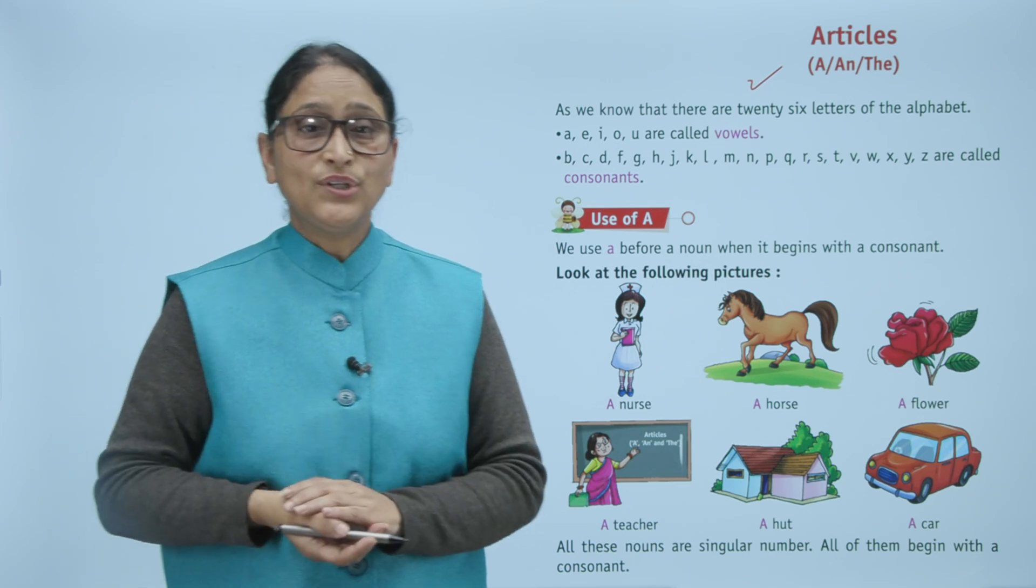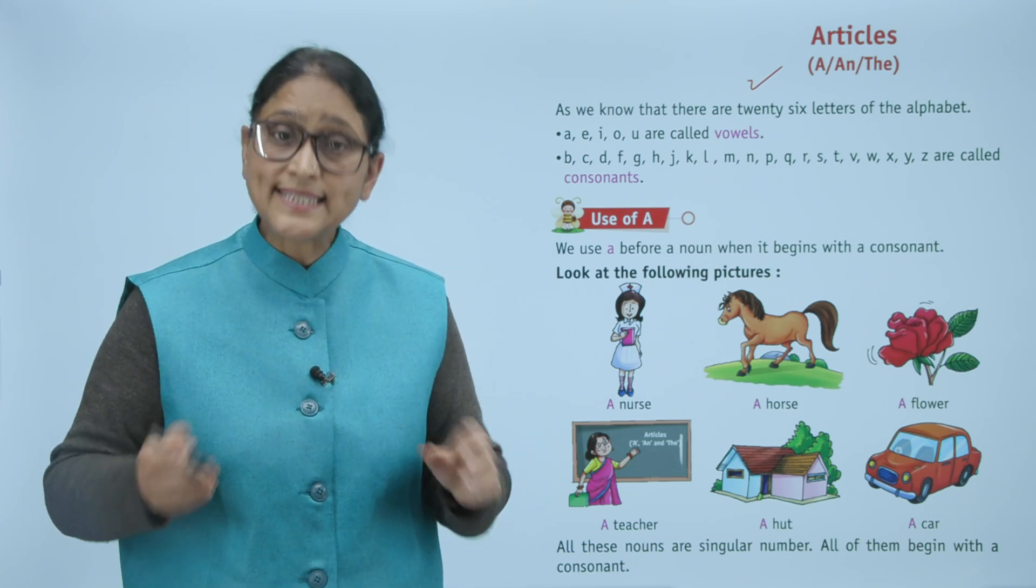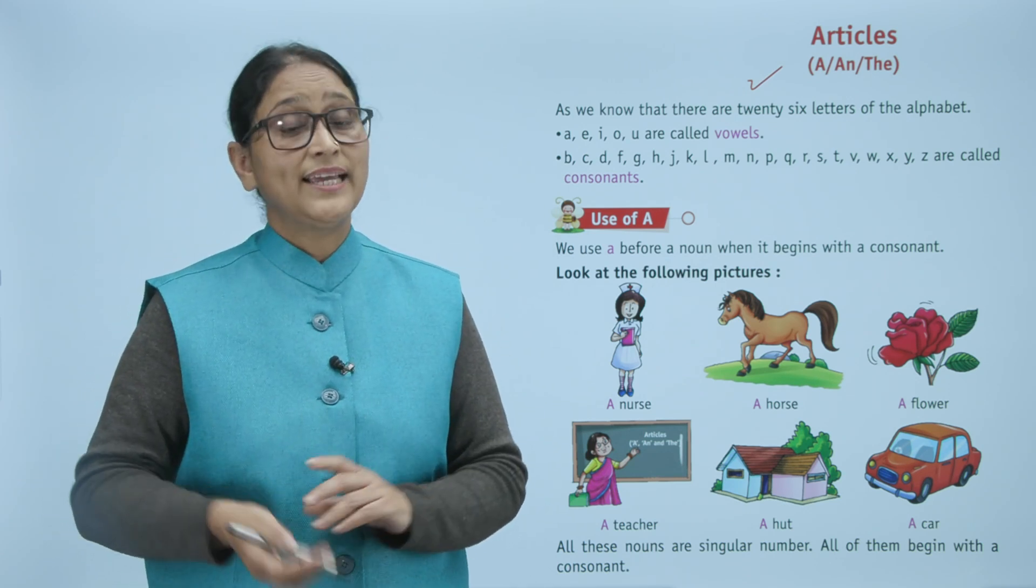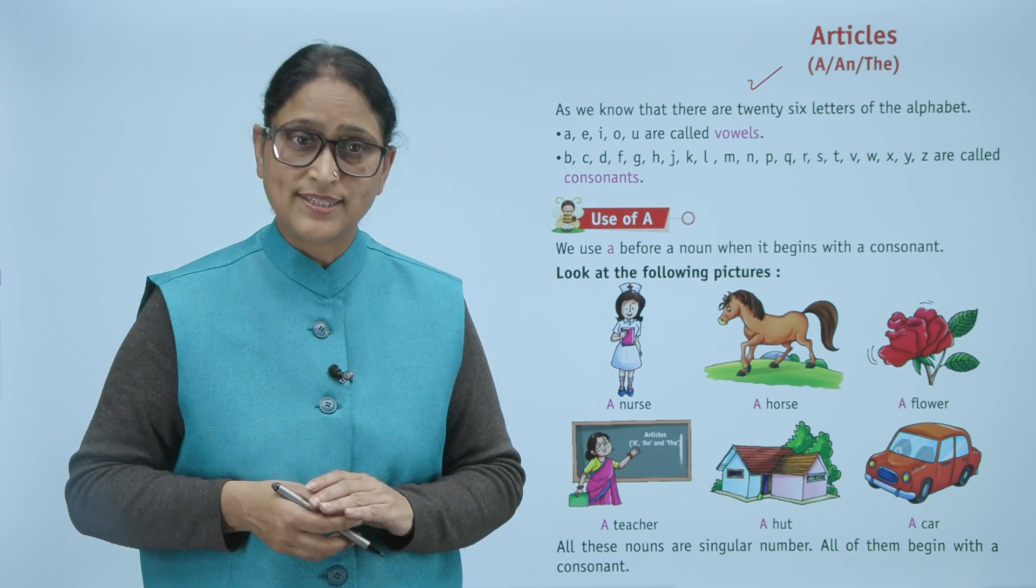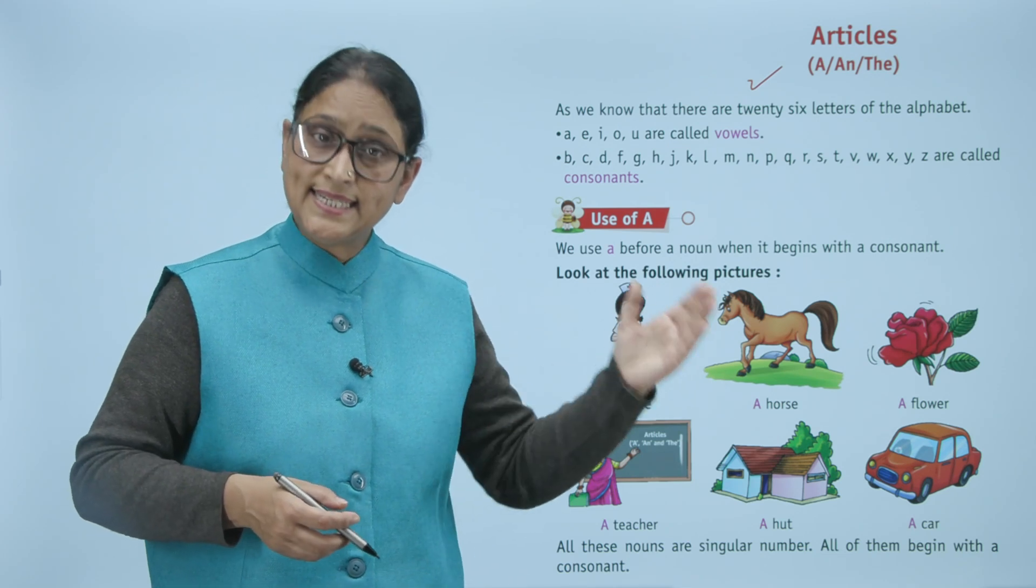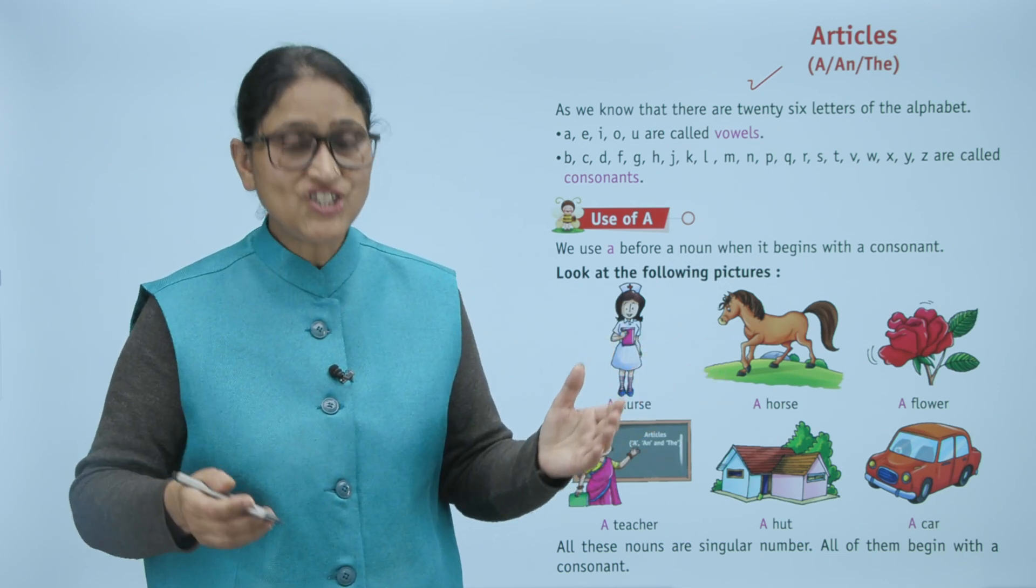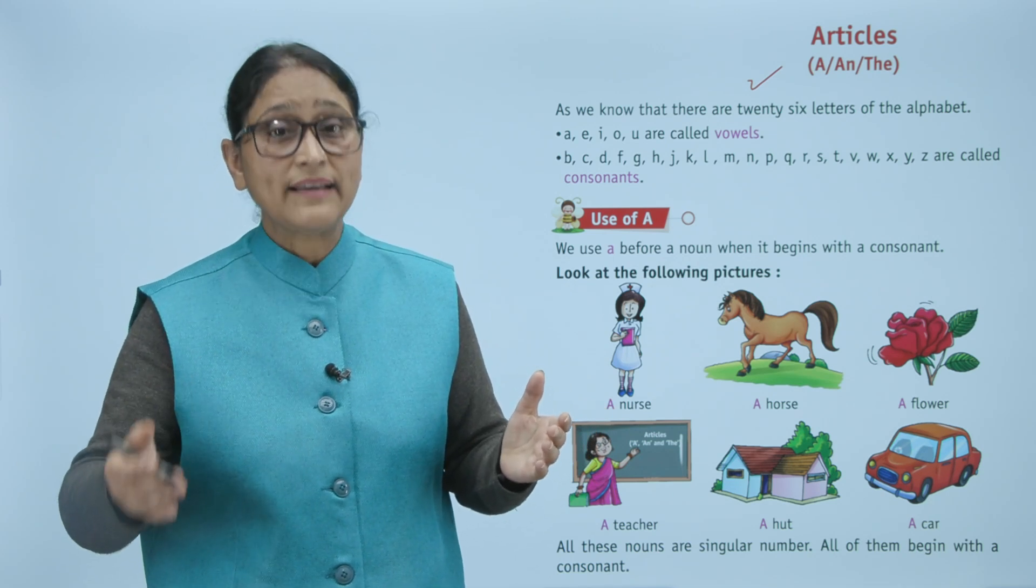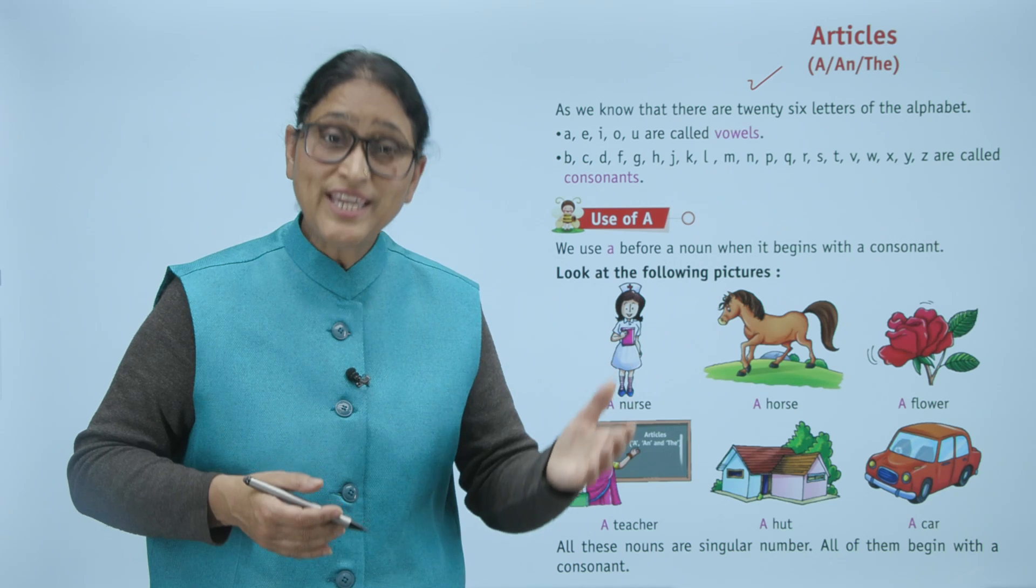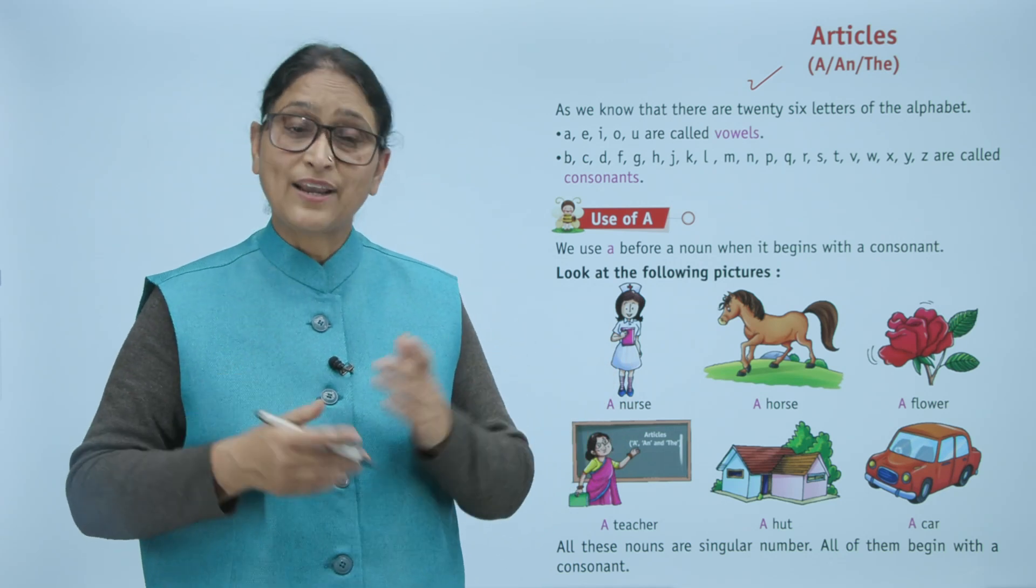As we know that there are 26 letters of the alphabet. A, E, I, O, U are called vowels. B, C, D, F, G, H, K, L, M, N, P, Q, R, S, T, V, W, X, Y, Z are called consonants.